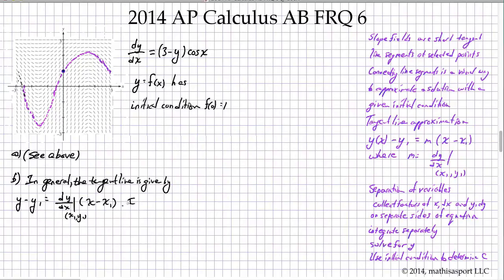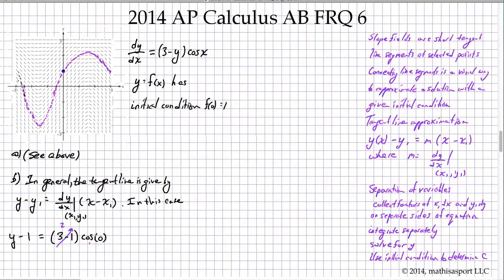In this case, we have y minus 1 equals dy/dx at the initial point. dy/dx is (3 minus y) cosine x, so that's (3 minus 1) times cosine of 0. That gives us 2 times 1, which is 2, multiplied by (x minus 0). So we have y minus 1 equals 2x, or y equals 2x plus 1.